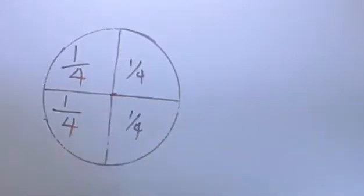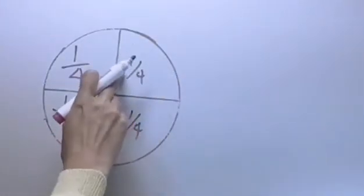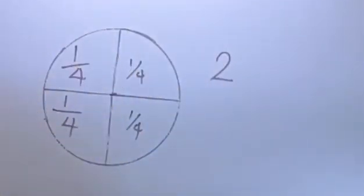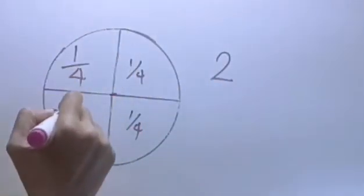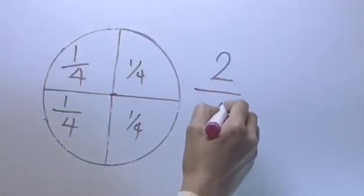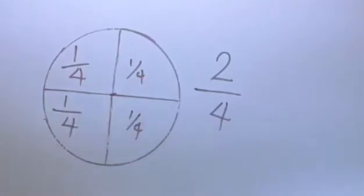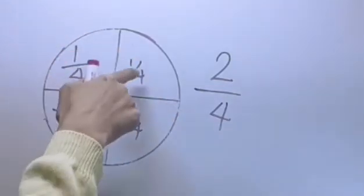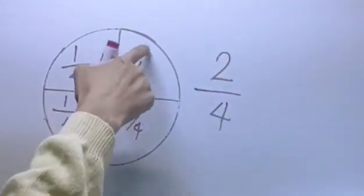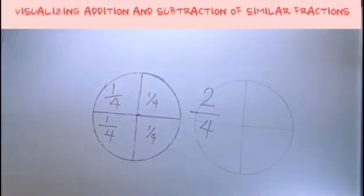Let's visualize addition. If you combine these two parts, how many parts do you have now? Of course, you have one, two. Two parts, two fractions of one whole divided into four. You have two, so two-fourths.